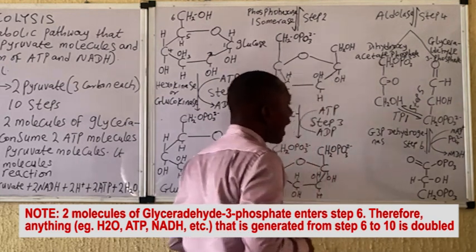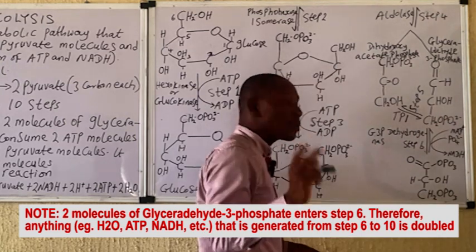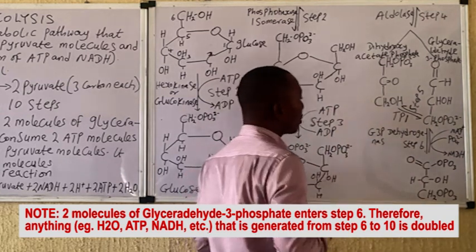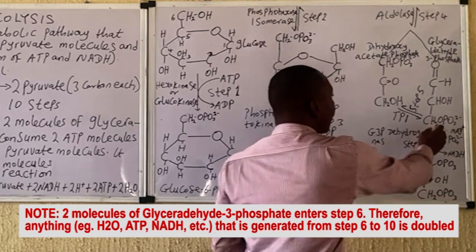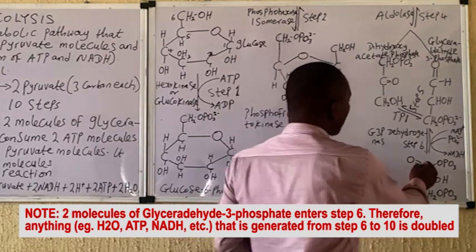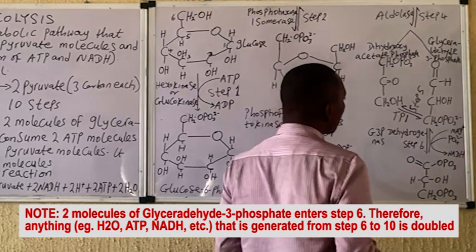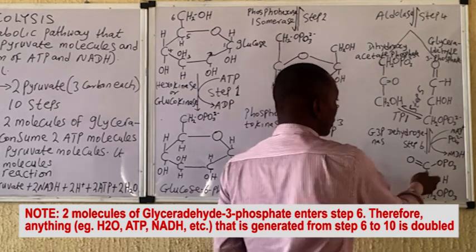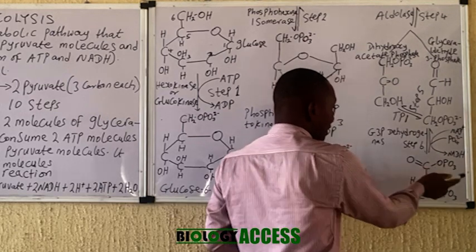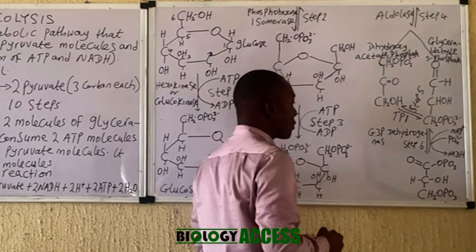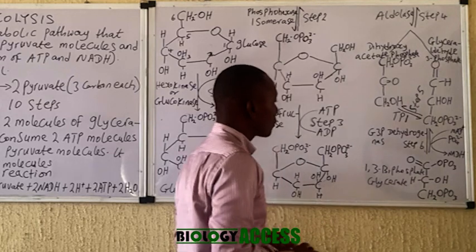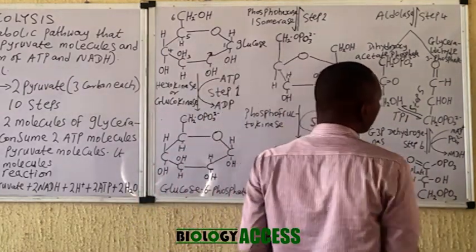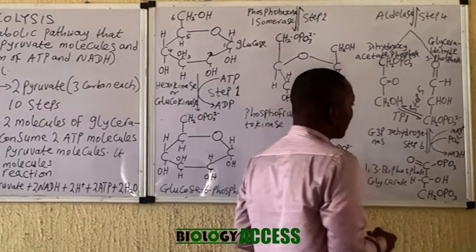At this point, we have two molecules of glyceraldehyde-3-phosphate entering step six. In step six, each G3P molecule is converted to 1,3-bisphosphoglycerate. The phosphate is present at carbon one and carbon three. Take note that the two NADH produced during glycolysis are generated here in step six, because NAD+ is invested and NADH is produced — one from each G3P molecule.